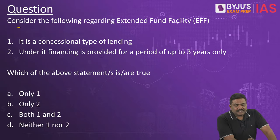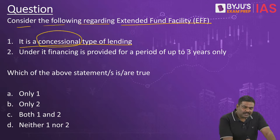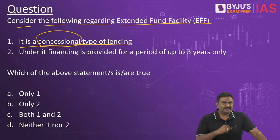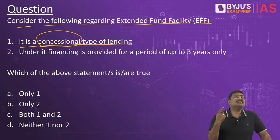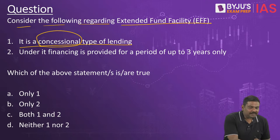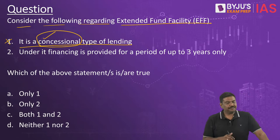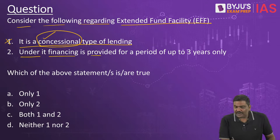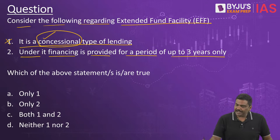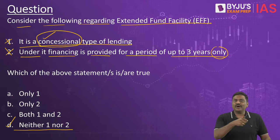MCQ: Consider the following regarding extended fund facility. Statement 1: It is a concessional type of lending — this is wrong. EFF is a non-concessional type of lending, meaning the rate of interest is higher. Statement 2: Financing is provided for a period of up to 3 years only — this is also wrong, as it is extendable. Therefore, the right option is D, neither 1 nor 2.